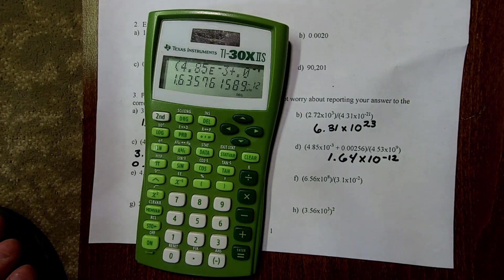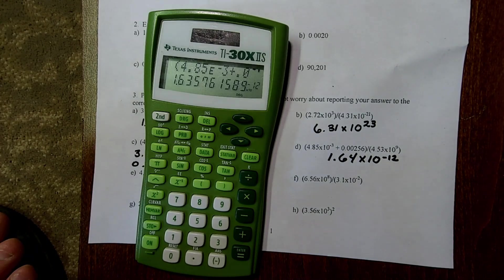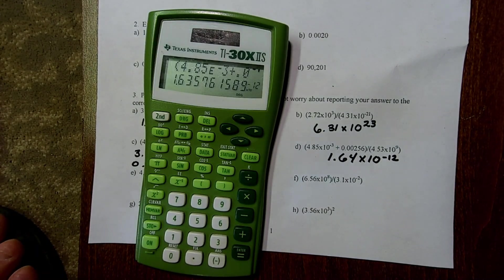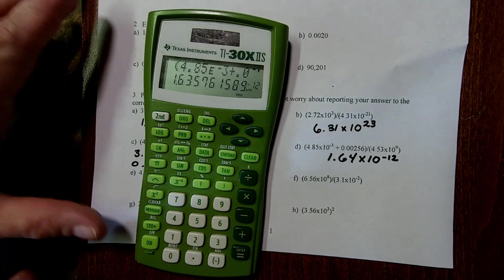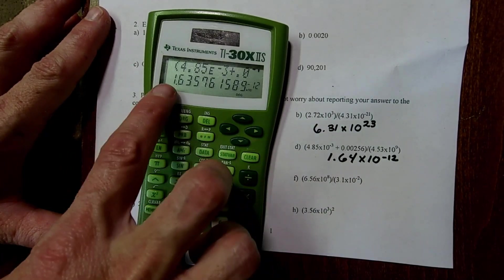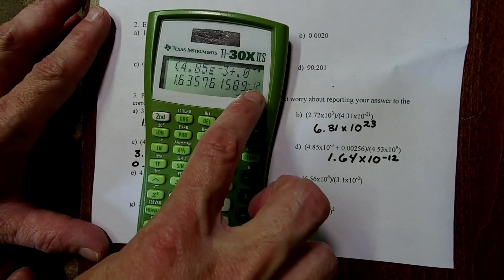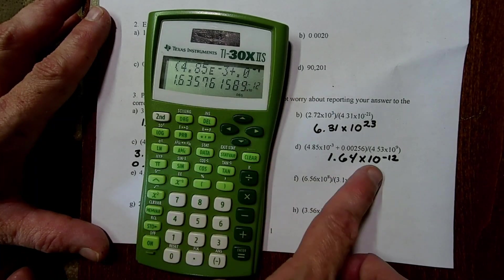So, we'll do 1.64 times 10 to the negative 12. So, I cut it off and rounded because of sig figs, but don't worry about that quite yet. You can come back and look at these again after we go over sig figs. But, 1.64, and then you see your negative 12 over there. So, I wrote it as times 10 to the negative 12.